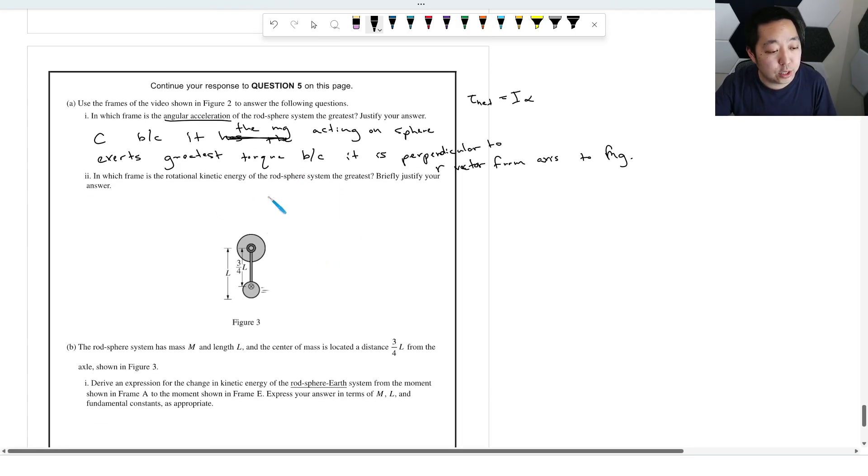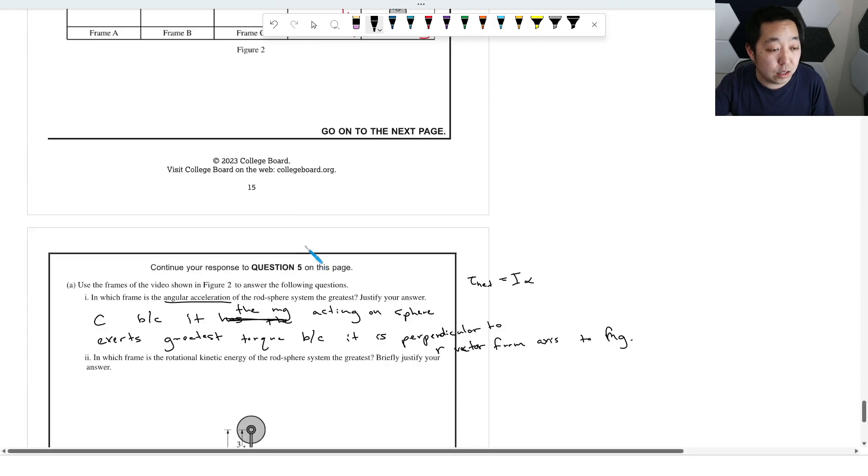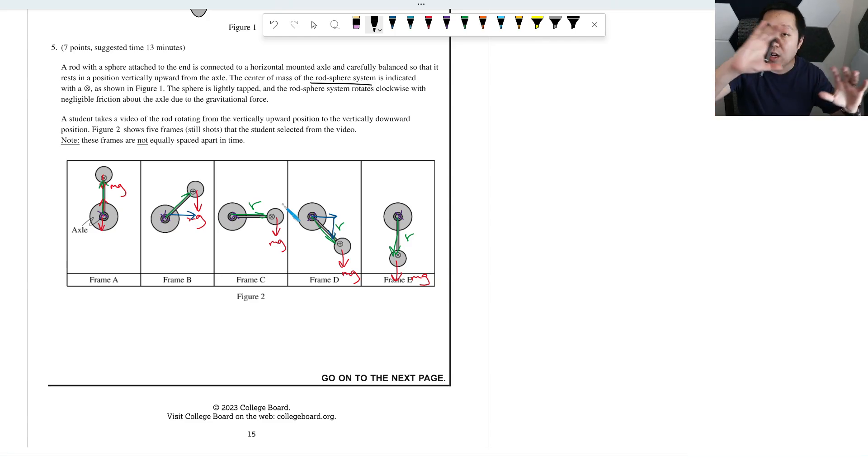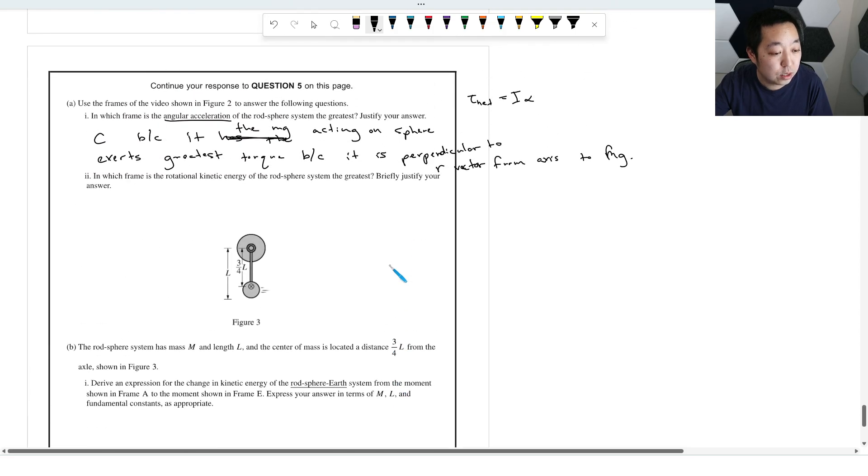In which frame is the rotational kinetic energy of the rod sphere system the greatest? Briefly justify your answer. Well, that's when it's spinning the fastest. So from an energy point of view, you want to think about, remember during this motion, conservation of energy, if you include the earth in the system, right, so there's no external work happening on this system, so conservation of energy. So at the lowest point, when it has the least potential energy, it would have the greatest kinetic energy. The lowest potential energy is going to be in frame E, because it's at the lowest point. Okay, so frame E.